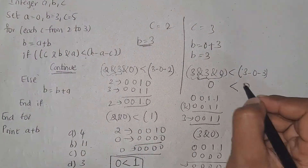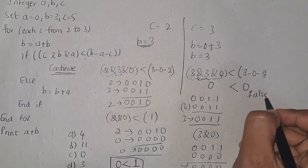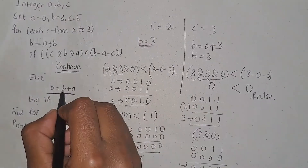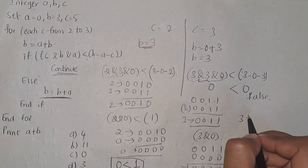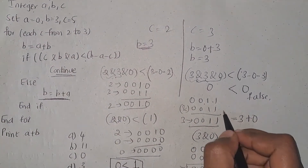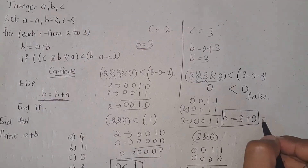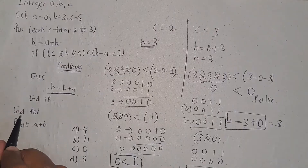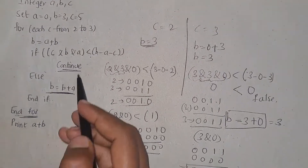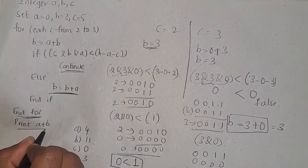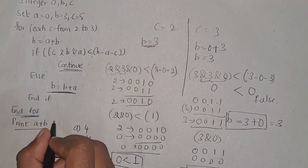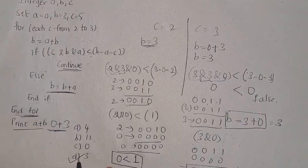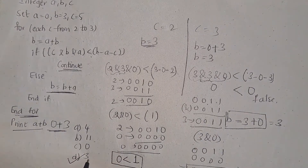The resultant is 0. Is 0 less than 0? This is false, so you will execute the else statement. b value is 3 and a value is 0 — assign into b, so b value is 3. End the condition, the for loop iterations are complete. Print a plus b: a is 0, b is 3, sum is 3. The answer is option D, which is 3.